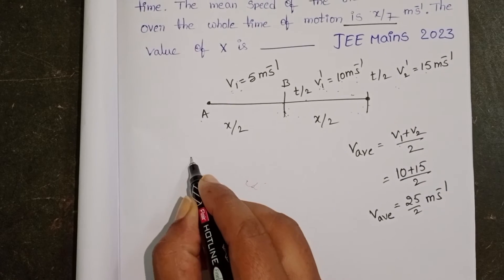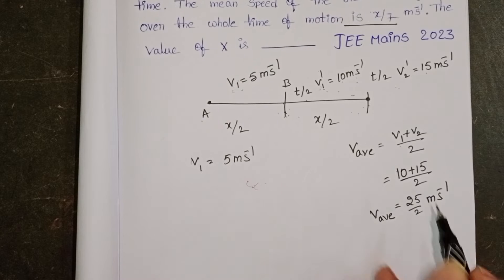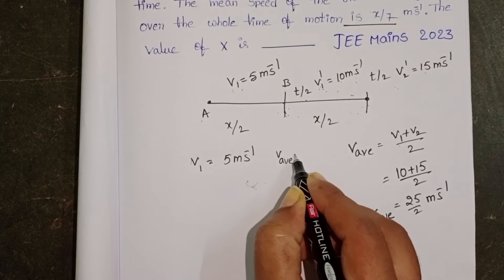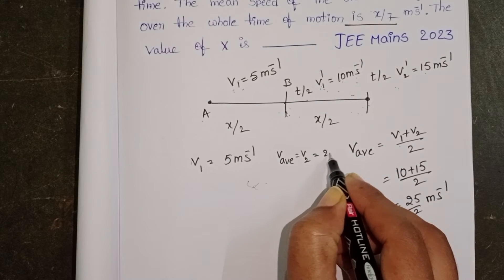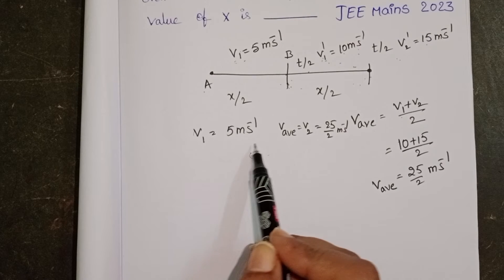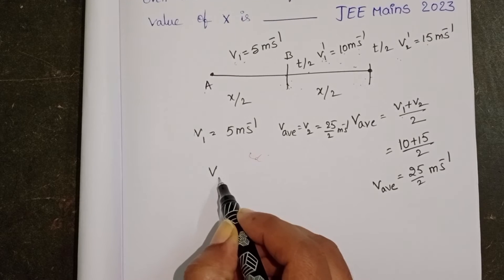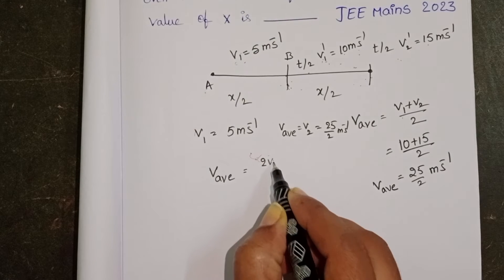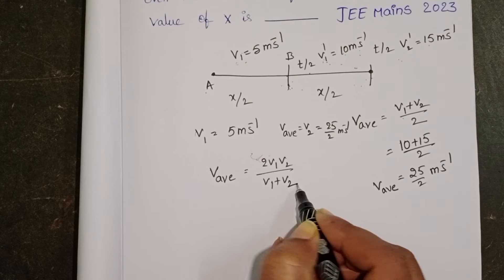The first half of the distance is covered with speed 5 meter per second, and the next half of the distance is covered with speed 25 by 2 meter per second. When the distance is divided into 2 equal parts, the formula to find V average is 2 V1 V2 by V1 plus V2.